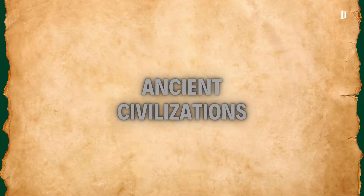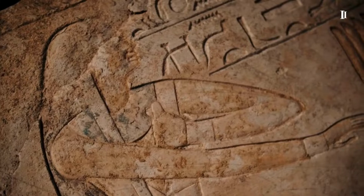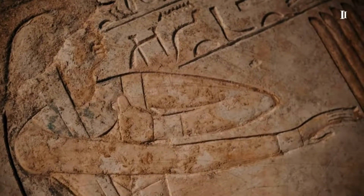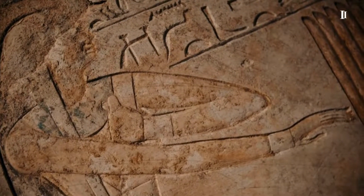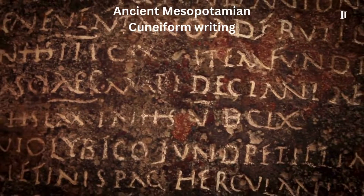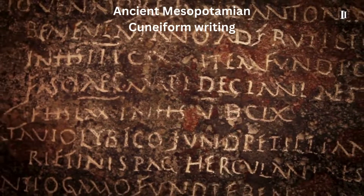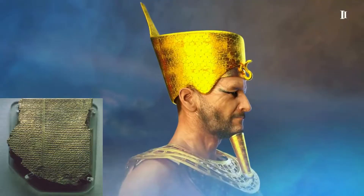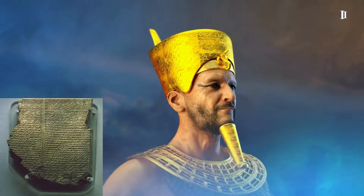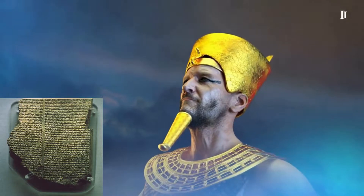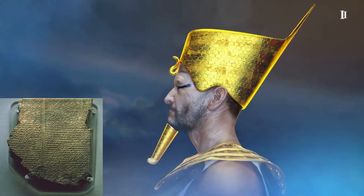As civilizations emerged, so did more sophisticated methods of recording information. Ancient Mesopotamians used cuneiform writing on clay tablets, creating one of the earliest written forms of data. The Epic of Gilgamesh, etched into these tablets, serves as an enduring example of literature and historical documentation from this era.